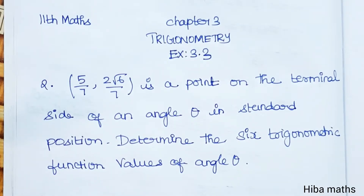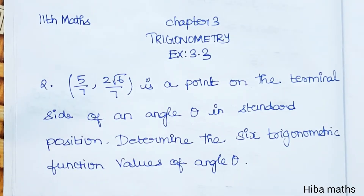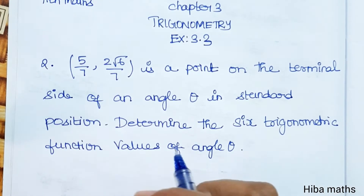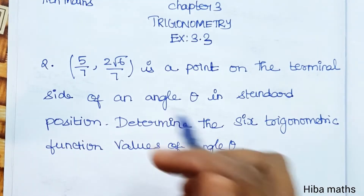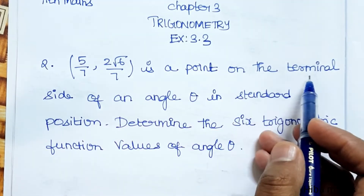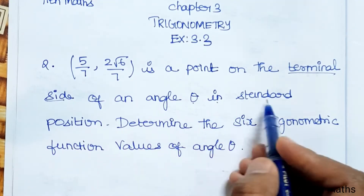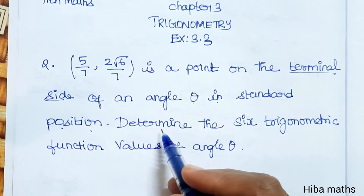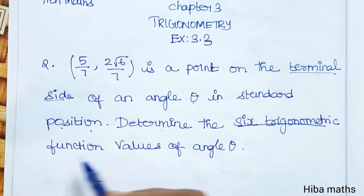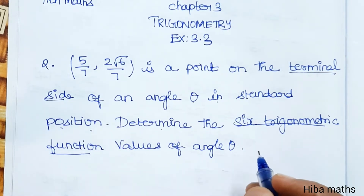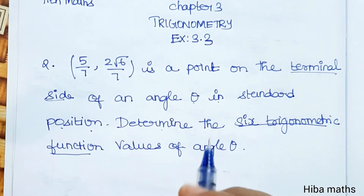Hello students, welcome to Hibamax 11th standard, Chapter 3 Trigonometry, Exercise 3.3, second question. The point (5/7, 2√6/7) is on the terminal side of angle theta in standard position. Determine the six trigonometric function values of angle theta.